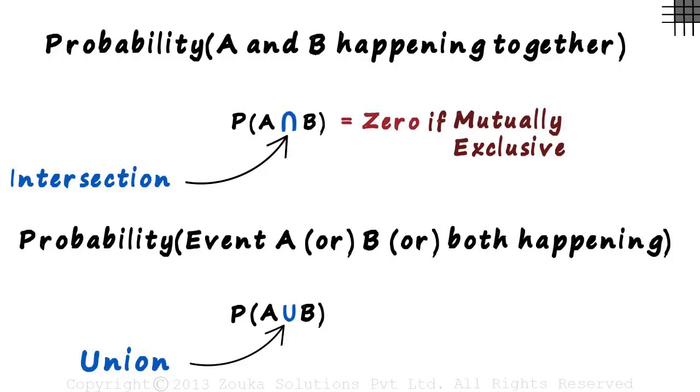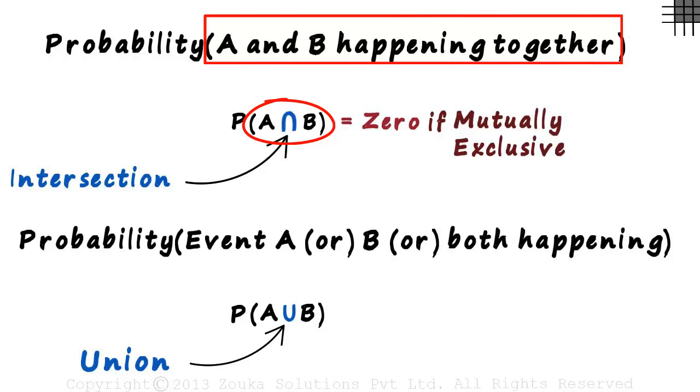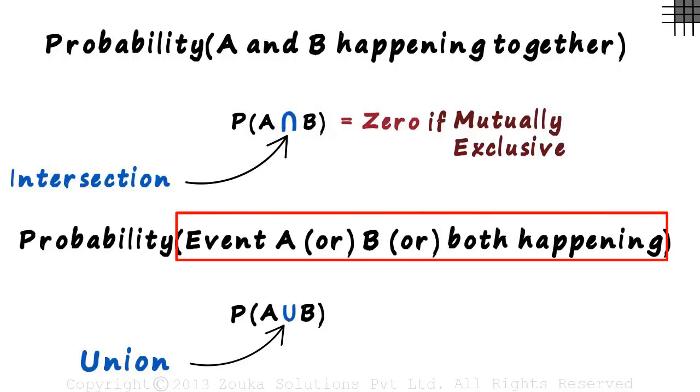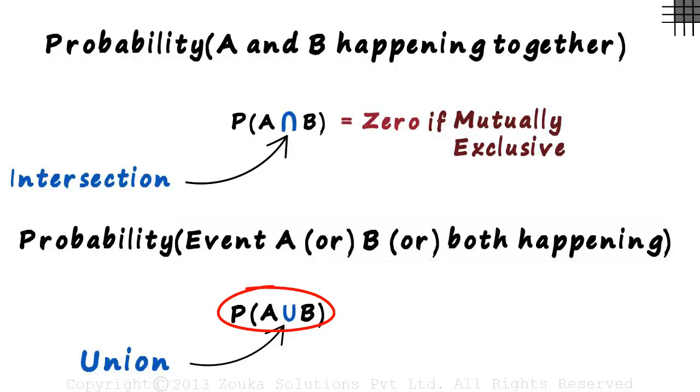This is where we left off in the previous video. A and B happening together is written as A inverted U B or A intersection B. And event A or event B or both happening together is written as A U B or A union B.